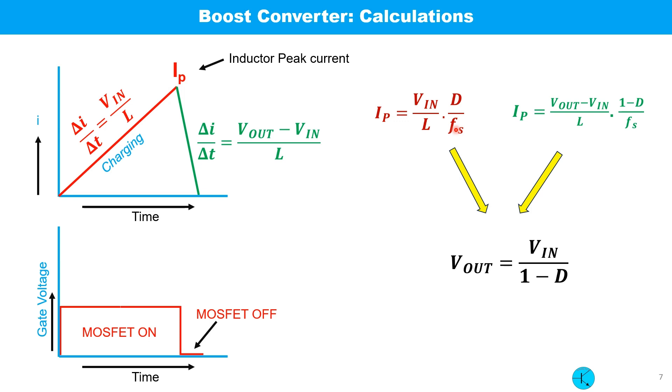During the MOSFET on time, the current falls from the peak to the bottom. Peak current can also be expressed by this equation. Equating these two equations we can find a very important relationship: output voltage equals input voltage divided by 1 minus duty cycle. This means that changing the duty cycle we can increase the output voltage, which is much higher than the input voltage.